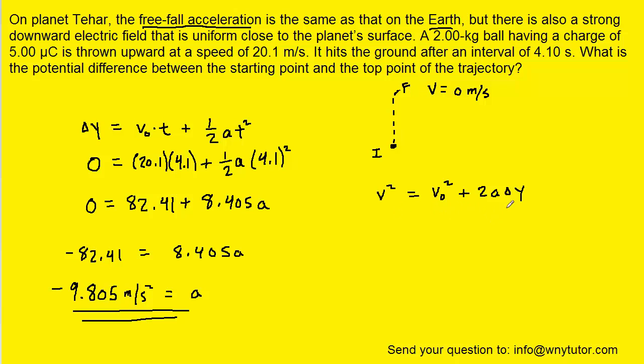We can turn to this equation from kinematics and try to solve for the vertical displacement of the ball, which again is going to be that maximum height that the ball achieves as it reaches that highest point. So we'll subtract v-naught squared from both sides and then divide both sides by 2a.